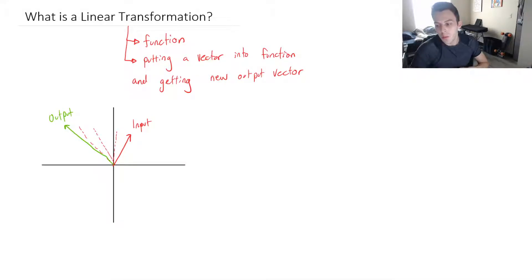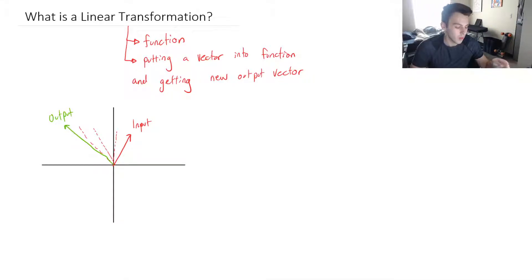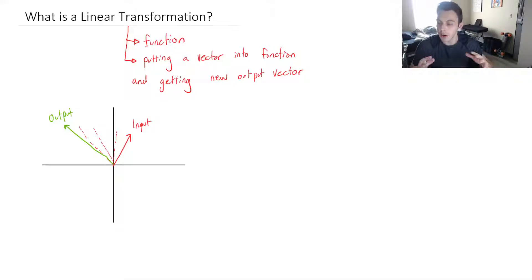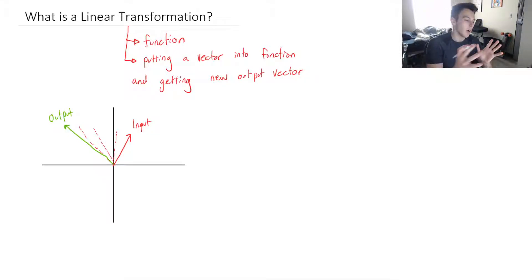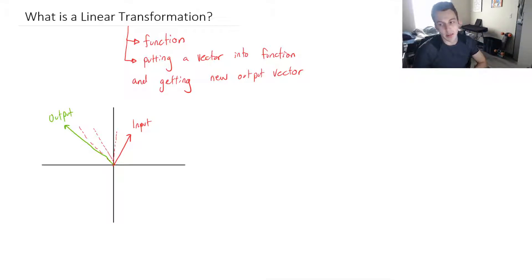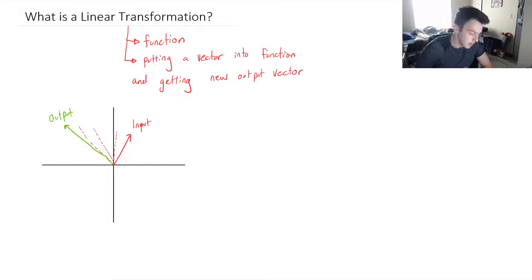When we think of linear transformations, we're usually not talking about just a single vector. When we apply a linear transformation, we're transforming space as a whole — we're changing how space looks, like squishing it, stretching it out, rotating it, and it can get really, really crazy looking. And that's where 'linear' comes in.